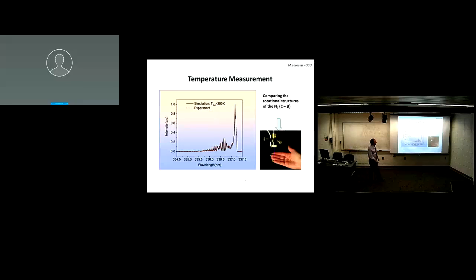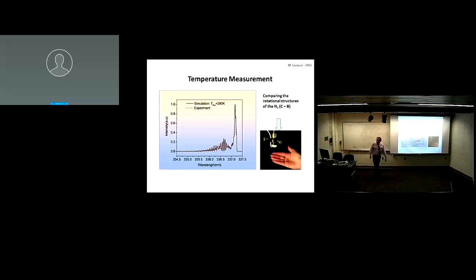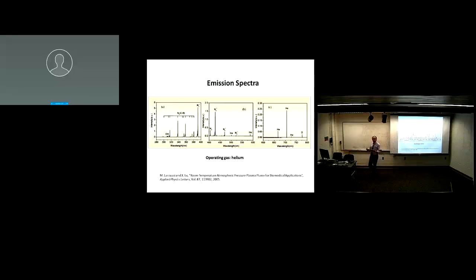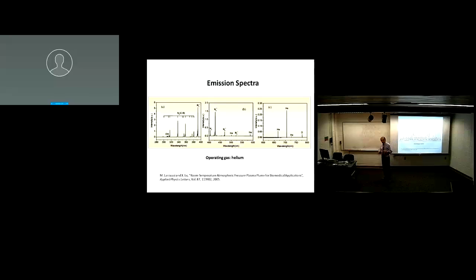We measured the temperature using spectroscopy — it turned out to be about 290 K, very close to room temperature. You can see a hand touching the plasma plume. Emission spectroscopy shows that we make OH and atomic oxygen. These are the reactive species we are trying to generate, especially for biomedical applications.